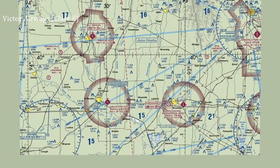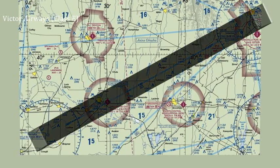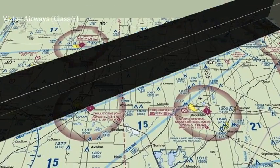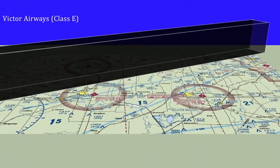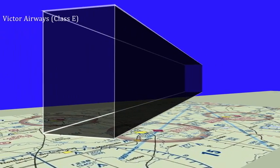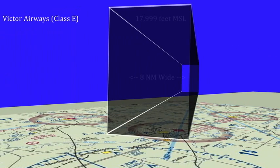Class E airspace is also designated along Federal Airways called Victor Airways. Victor Airways are normally 8 miles wide, 4 miles to either side of the airway's centerline, and extend from 1,200 feet AGL up to, but not including, 18,000 feet MSL.